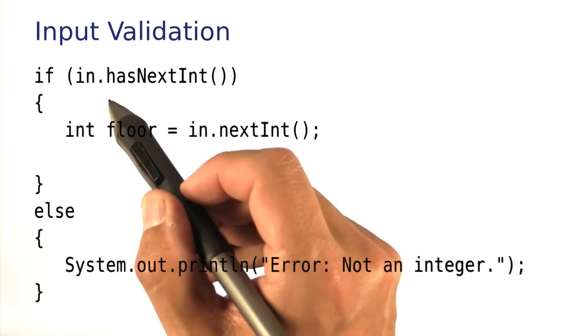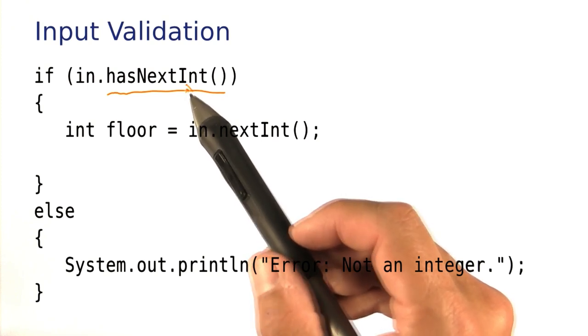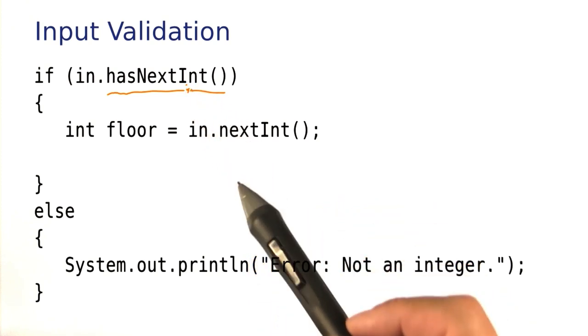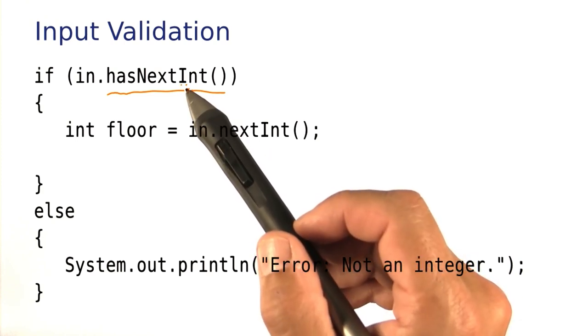There is another method that we haven't yet seen called hasNextInt, which looks at the user input and instead of doing what the nextInt method does, namely returning it, it checks whether it is an integer or not.